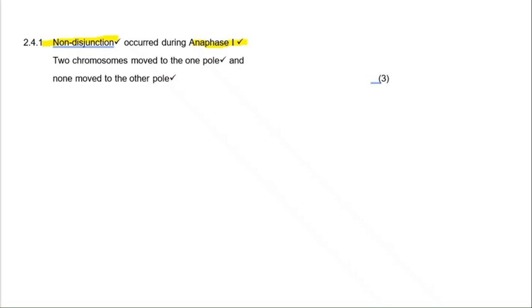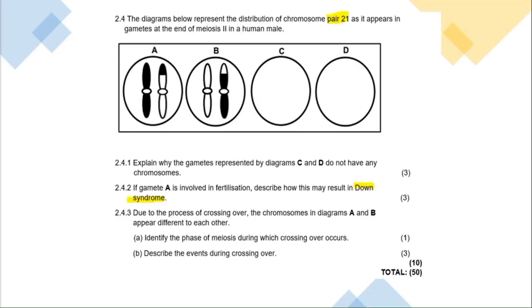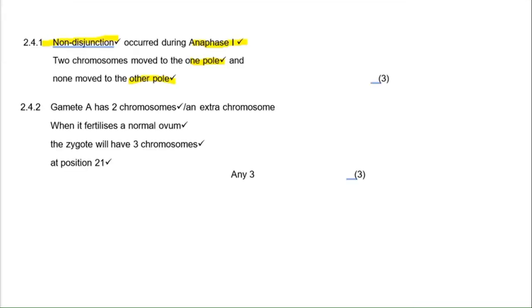That covers the three marks for 2.4.1. Then 2.4.2 asks: if gamete A is involved in fertilization, describe how this may result in Down syndrome. Gamete A has two chromosomes — an extra chromosome. When it fertilizes a normal ovum — note the mark is on 'ovum' because you're looking at a male — the zygote will have three chromosomes at position 21. Any combination giving trisomy 21 earns the marks.